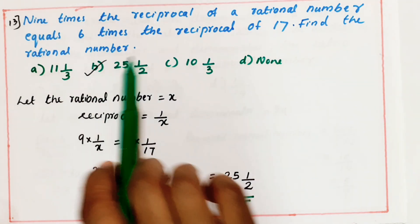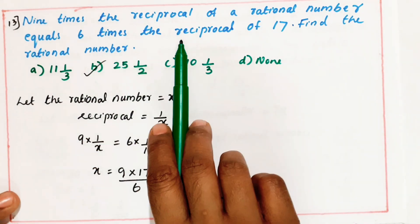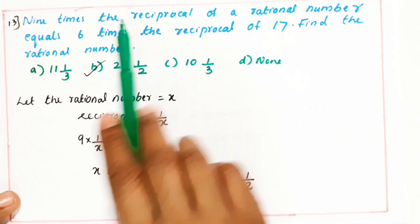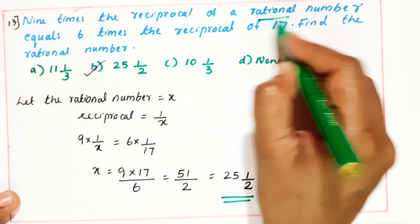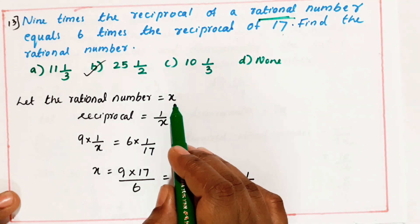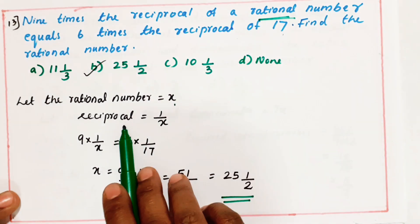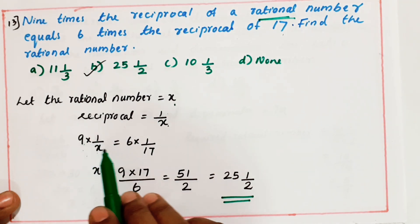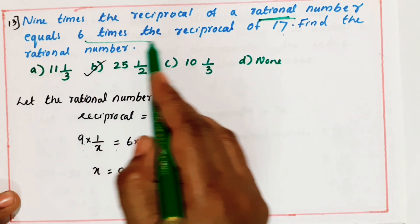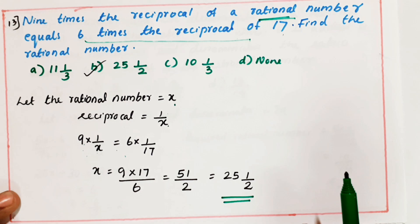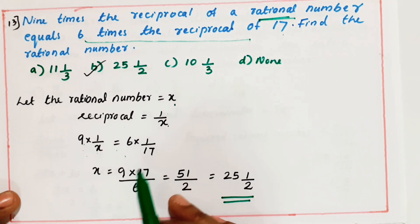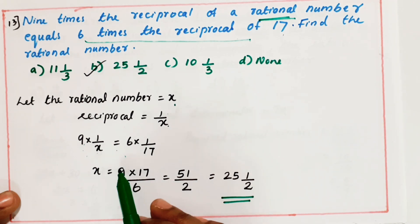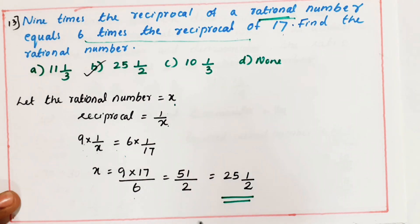Next: 9 times the reciprocal of a rational number is equal to 6 times the reciprocal of 17. I don't know the rational number, so I'm keeping it as x. 9 times the reciprocal of the number — what is the reciprocal? 1 by x. So 9 into 1 by x is equal to 6 times the reciprocal of 17, which is 6 into 1 by 17. Cross multiply: x equals 9 into 17 by 6, that is 51 by 2 — cancelling, 3 into 17, giving 51 by 2.